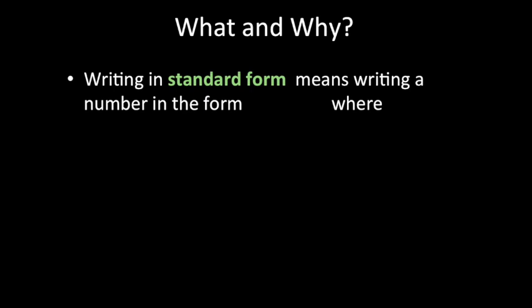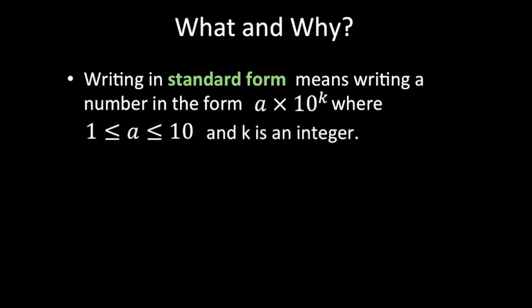So what is standard form, and why do we need to write numbers in standard form? By definition, writing in standard form means writing a number in the form a times 10 to the power of k, where a is between 1 and 10, inclusive. So a could be 1.2, 3.5, or 4.6, but it cannot be beyond 10 — for example, 15.6 is not allowed. So a can only be between 1 and 10, and k is an integer.